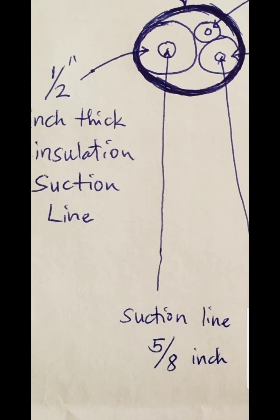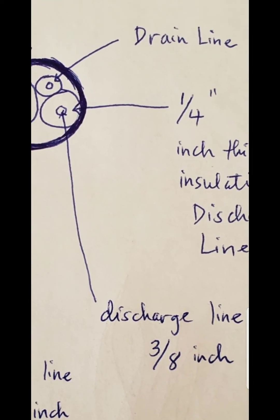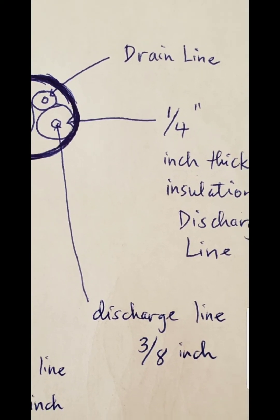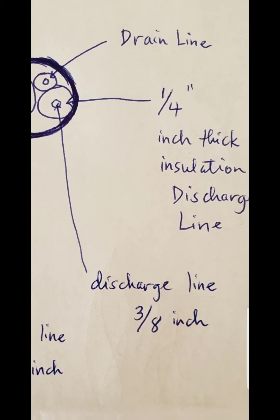And the insulation of the suction line is half inch. Now take note that the insulation is round, so the overall thickness is twice, twice one-half inch, and I will show you that in the solution. For the discharge line, it's a quarter inch thick insulation and the discharge line itself is 3/8 inch.